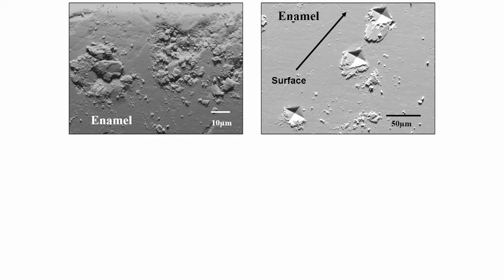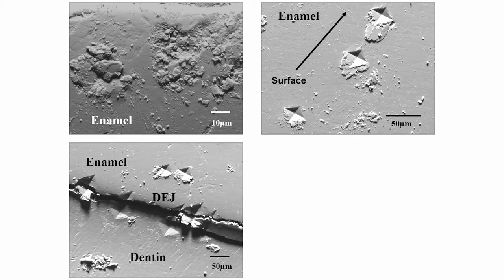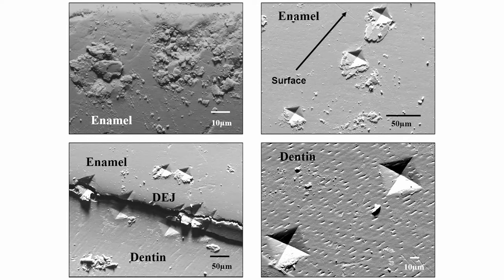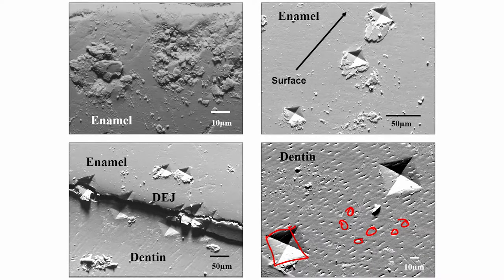You can see how the Vickers indents appear at the dentine enamel junction, in the enamel part, and in the dentine part — where you have small dentinal tubules — with very clear and distinct Vickers hardness impressions visible in the dentine part as well.